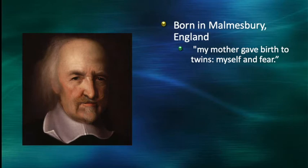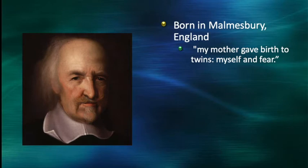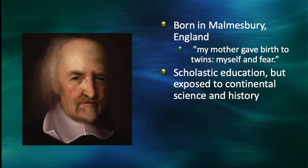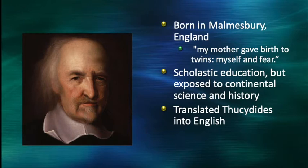Turning to Thomas Hobbes: he was born in Malmesbury, England in 1588. He wrote of his own birth that his mother gave birth to twins — himself and fear — born prematurely as the Spanish Armada was invading England. He received a traditional scholastic education but was also exposed to continental science and history. He toured Europe between 1610 and 1615, exposed to authors involved in the recovery of Greek and Latin thought. His first major publication was a translation of Thucydides' History of the Peloponnesian War from Greek into English in 1628 — the first English translation of that work.